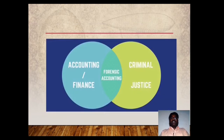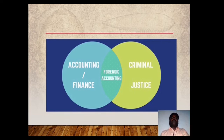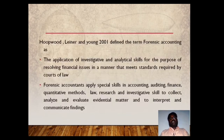This is the Venn diagram that explains in a simple manner what is meant by Forensic Accounting. It is nothing but an intersection of accounting and finance skill and criminal justice skill. So Forensic Accounting is the intersection of these two things: accounting and finance skill, and criminal justice skill.